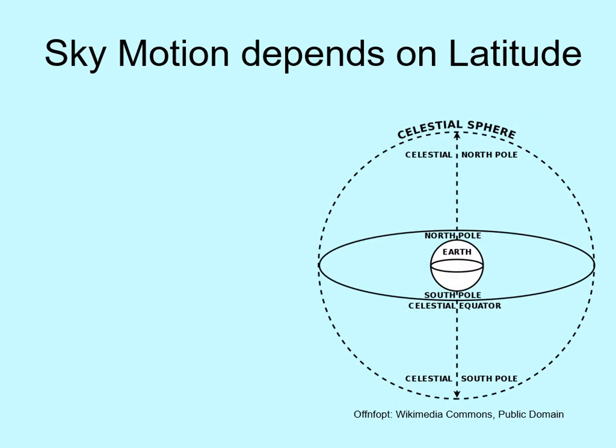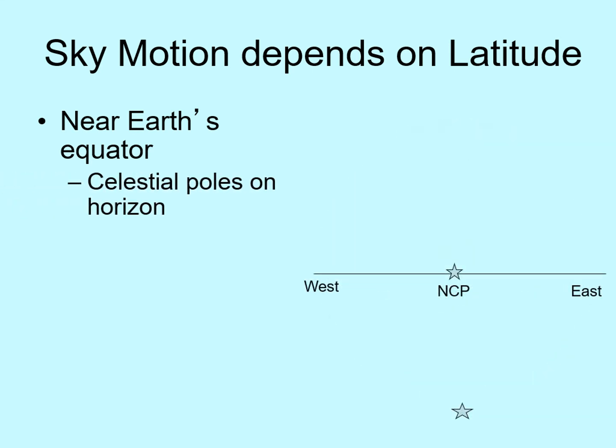Now we can use the idea of a celestial sphere to figure out how our view changes as we move north and south on the Earth. Let's start by assuming we're standing at the Earth's equator. Someone standing there would see the north celestial pole right on their northern horizon, and the south celestial pole right on the southern horizon. As the Earth turns, stars appear to rotate around this point. We only see a star when it comes up above the horizon, so it looks like the star rises in the east and sets in the west. So when we started talking about daily motion making things rise and set, we were really talking about the view from the Earth's equator.